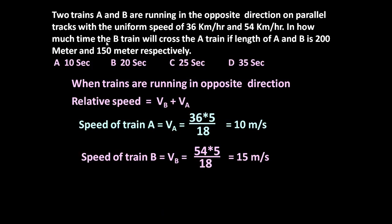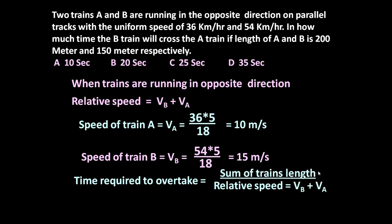Now we have to determine in how much time train B will cross train A if length of A and B is 200 meters and 150 meters respectively. So time required to overtake is equal to sum of trains length divided by relative speed, that is VB plus VA.